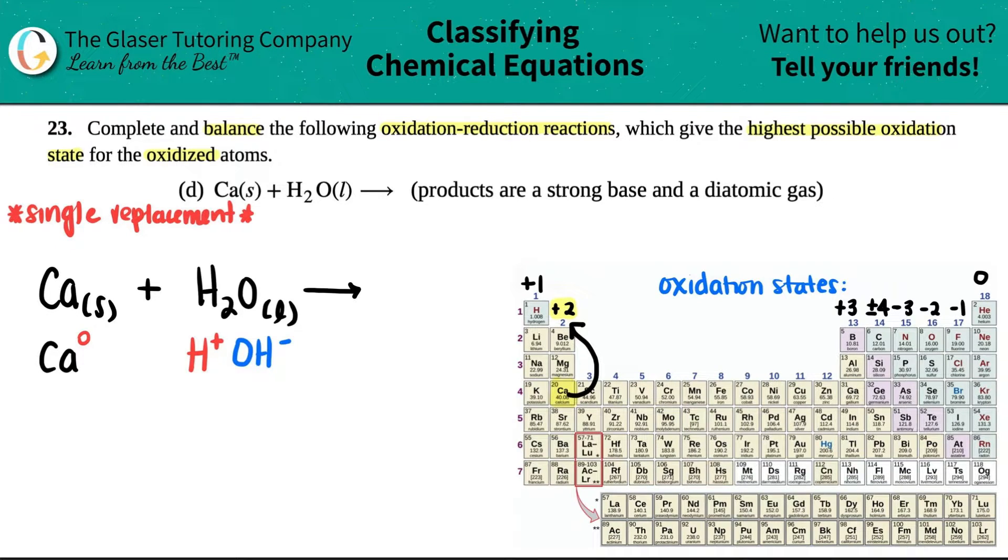But when it makes a compound it's going to want to be that +2. So if the calcium wants to be the positive, who is it going to kick out? It has to kick out the other positive, because in a compound you can't have two positives coming together and you can't have two negatives - you have to have one positive and one negative. So if calcium wants to be the positive, it's swooping in and it wants to only react with OH-, kicking out the hydrogen.